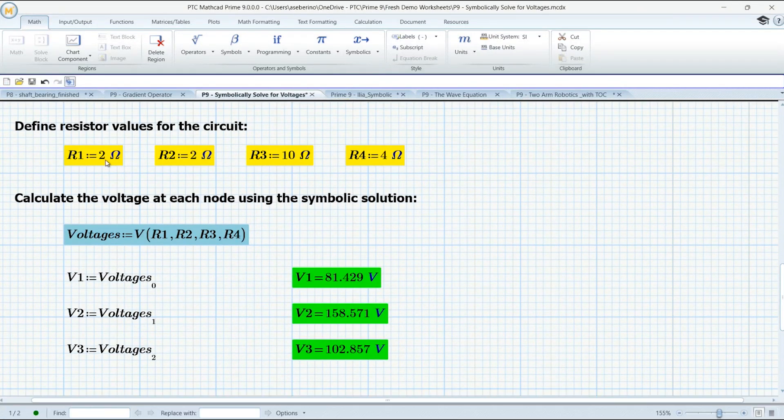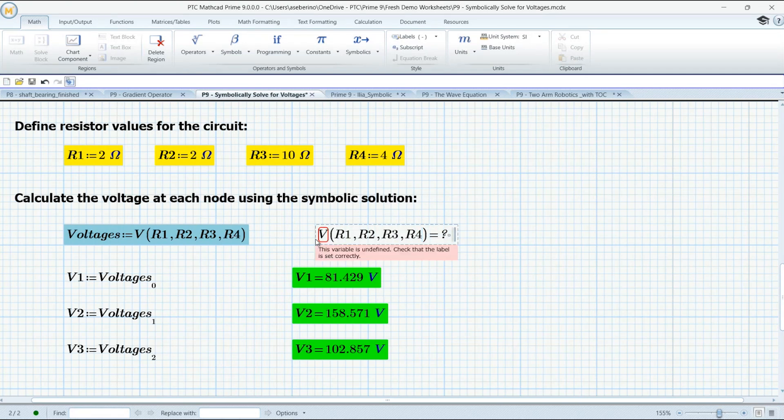So now here we can define our four resistors, two ohms, two ohms, ten ohms, and four ohms. And then, and I can show you how we do this, we can call that function v. So I'm just typing it, r1, r1, r2, r3, r4. And we could certainly type equals here. Well, that didn't work very well. So we could type equals here. Or, oh, because it's symbolic, so I can't type equals.